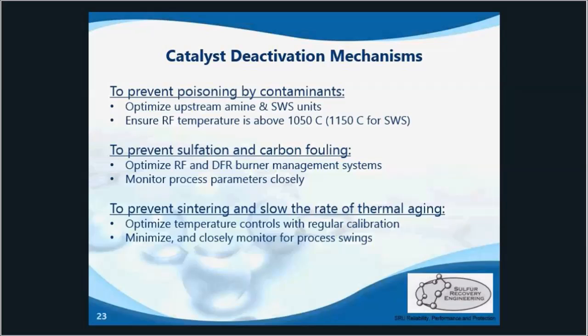Optimizing the converters means taking measures to prevent these catalyst deactivation mechanisms from occurring. To prevent poisoning, we have to clean up the feed streams and ensure the reaction furnace temperature is adequate for maximum destruction of contaminants. To prevent sulfation and carbon fouling, we have to optimize the burn strategies or burn ratios for the RF and any DFRs that may be in place. This minimizes the free oxygen carryover and prevents soot deposition.